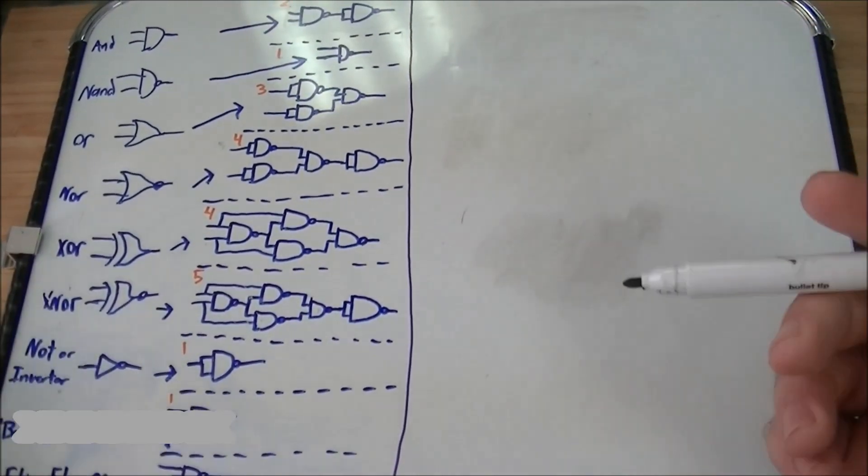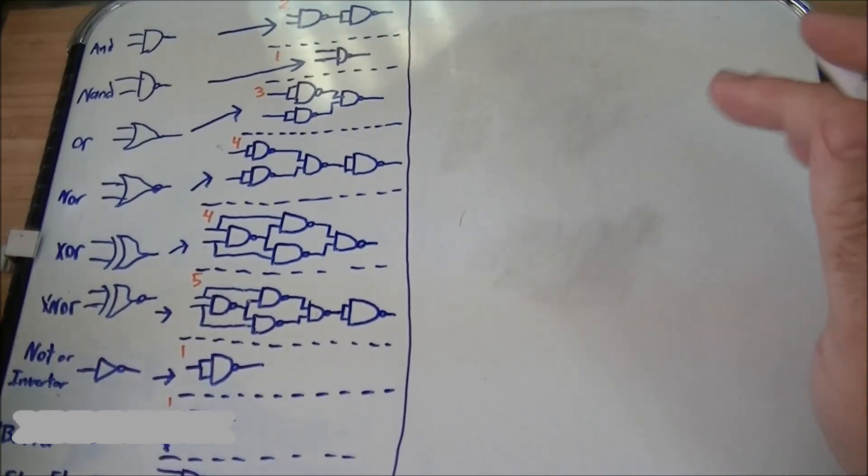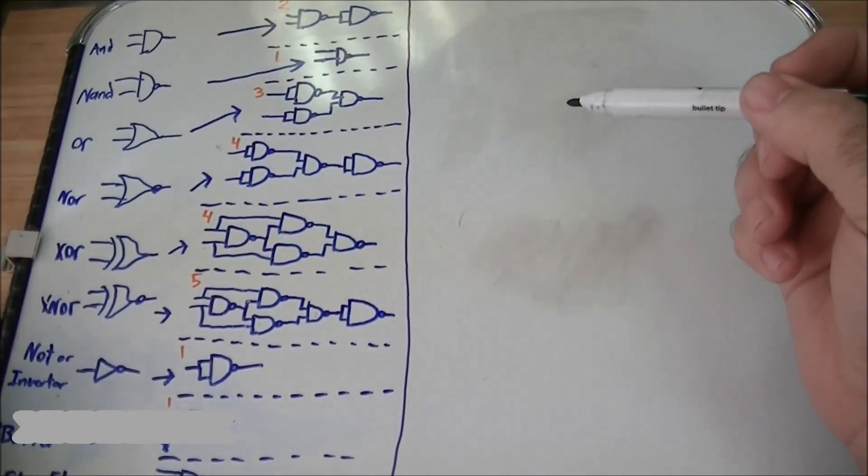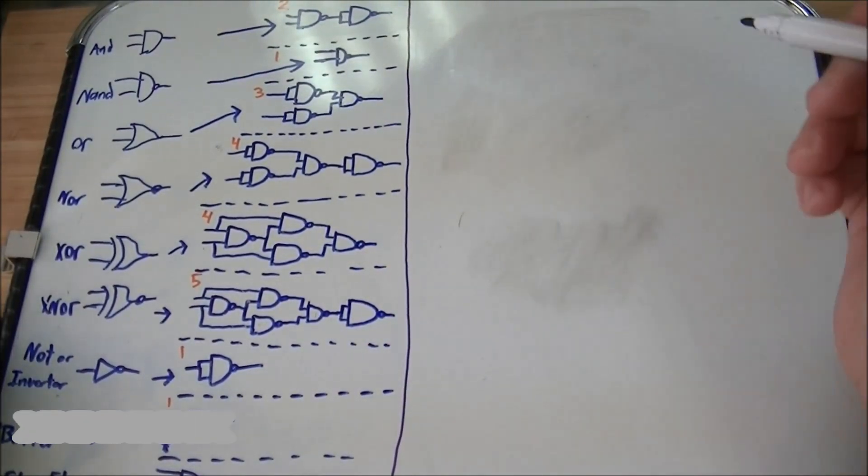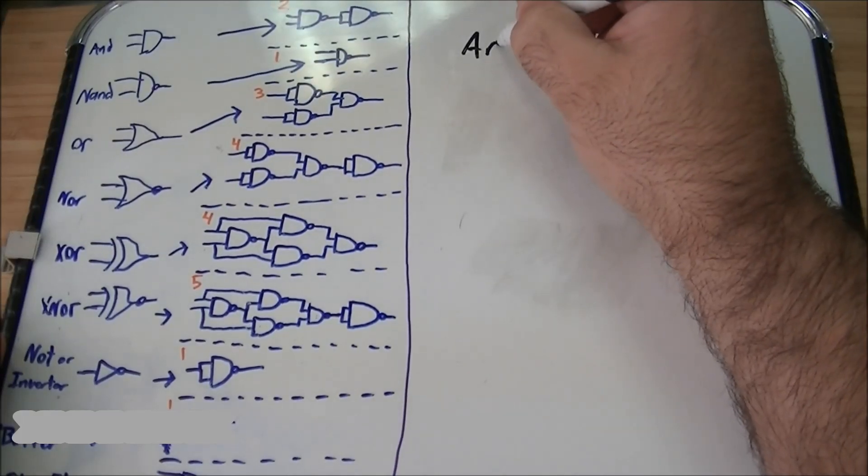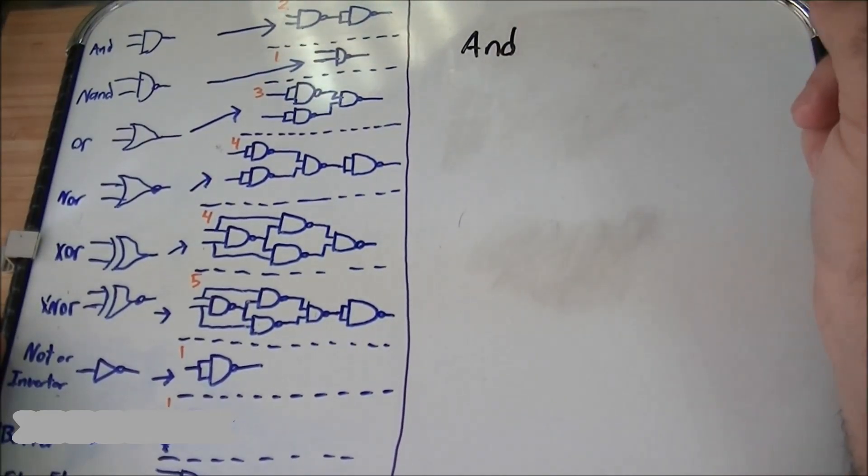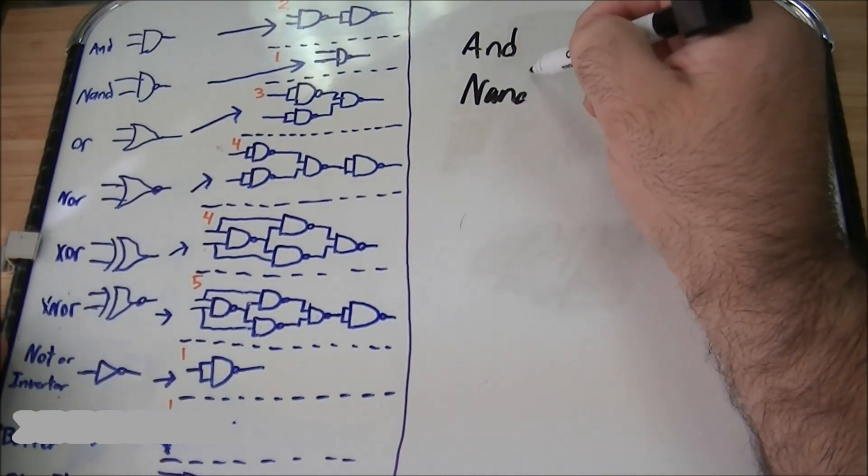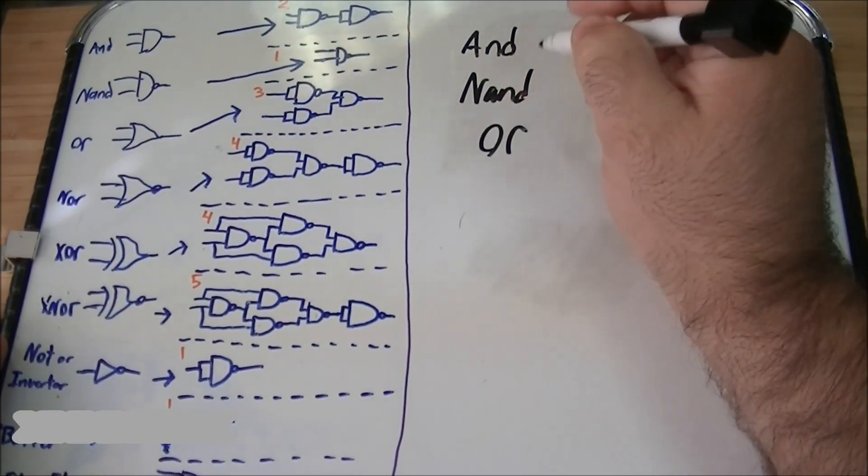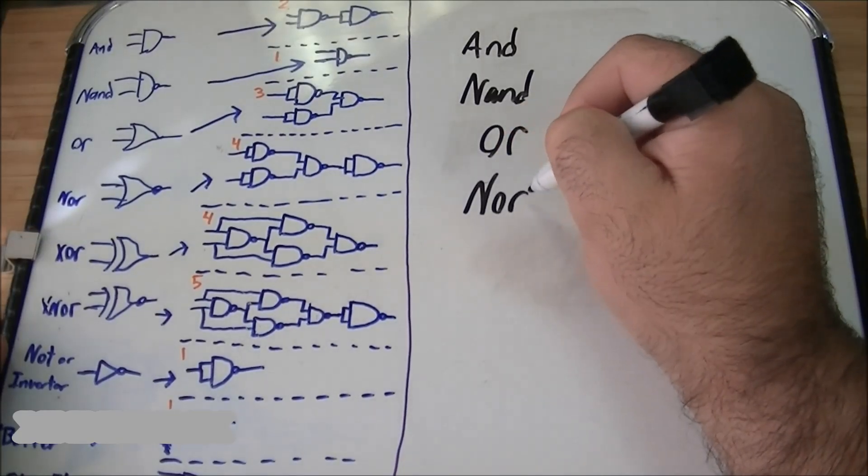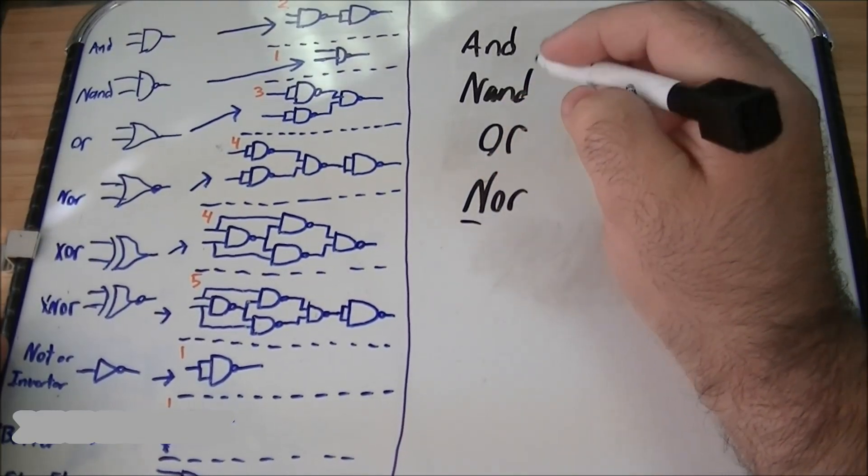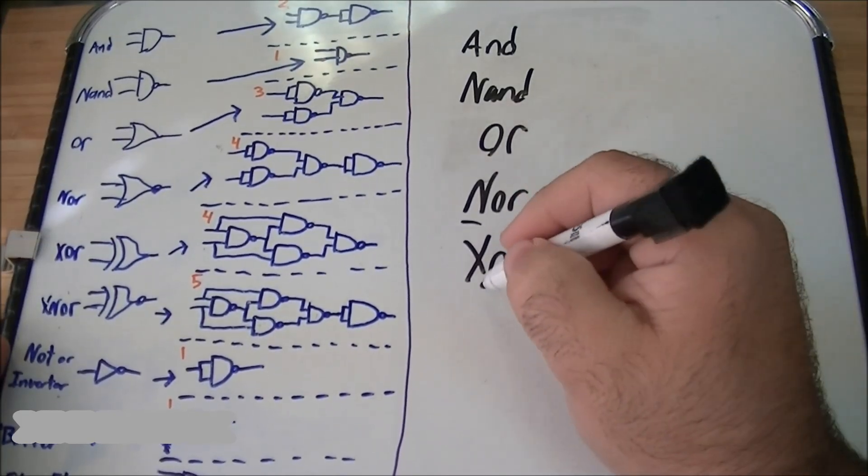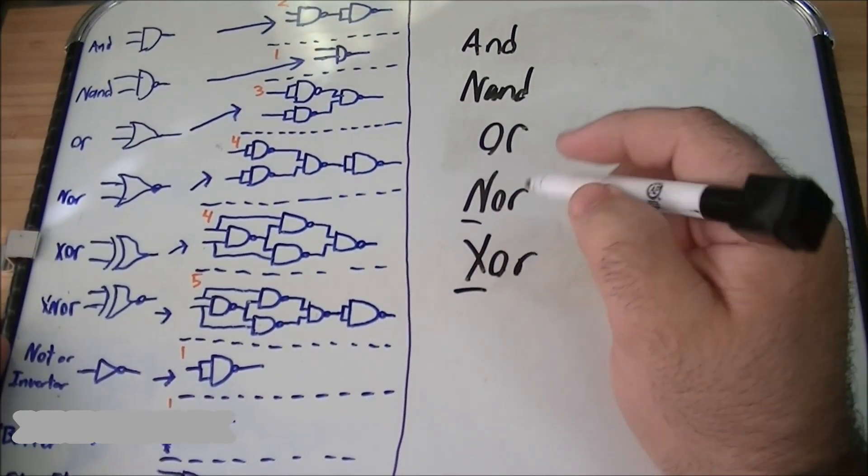We're going to talk about why the NAND gate is the most popular. The reason it's the most popular is because if you're doing a demonstration board, you can create all seven popular logics with a NAND gate: the AND, NAND, OR,